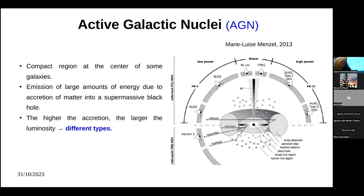Let me start with a small introduction about AGN, since I expect you're already familiar with them. Active galactic nuclei are very compact spatial regions in the centres of galaxies that impact heavily the evolution of the galaxy. They are known for emitting a large amount of energy across many different spectral bands, and there are many different types depending on the level of accretion the supermassive black hole is experiencing and the viewing angle.